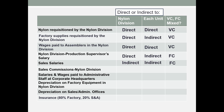Sales commissions in the nylon division: you could trace that directly to the division, and you could trace it to the inventory that was sold. Sales commissions are generally variable costs.